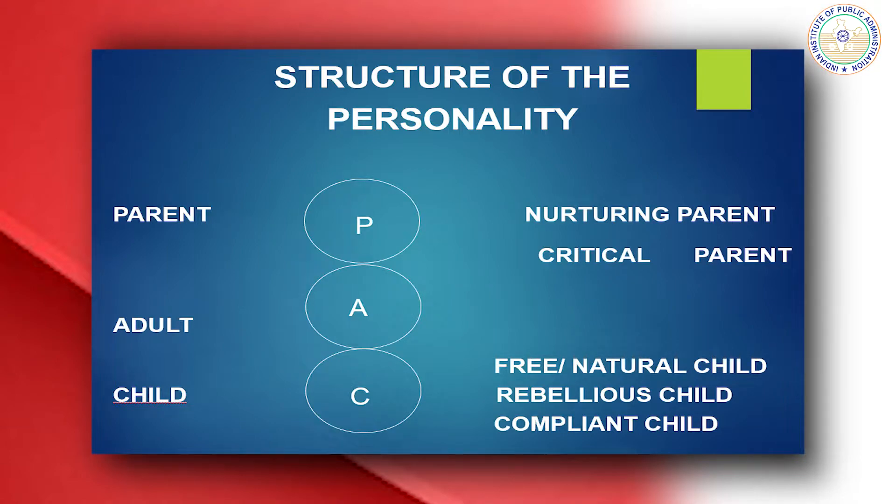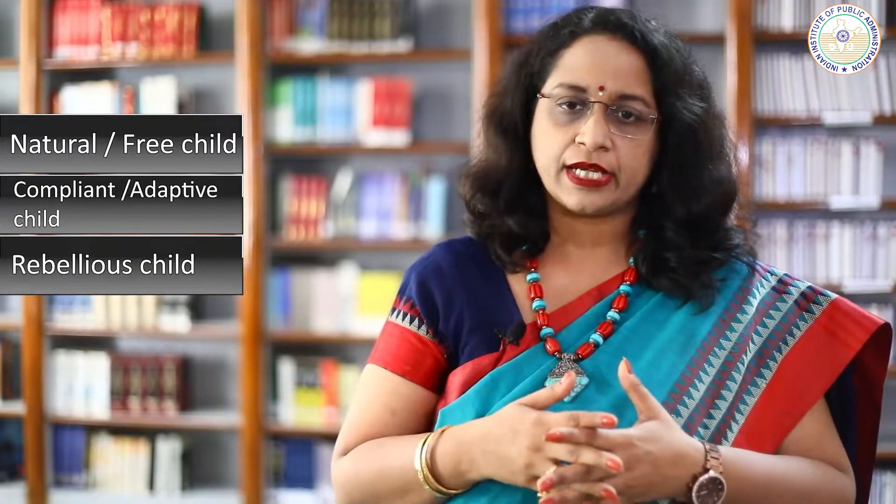Unhealthy childhood experiences can lead to dysfunctional behaviors. A parent ego state is of two types: nurturing parent and critical parent. Child ego state is of three types: free or natural child, compliant child, and rebellious child. Each ego state has both positive and negative features. We can detect the ego state that is in control by carefully observing the person's tone, posture, gesture, facial expressions, and words he is speaking.